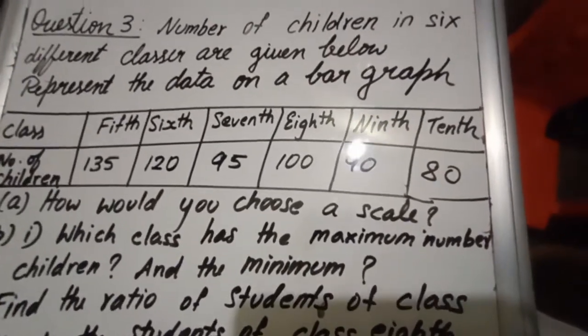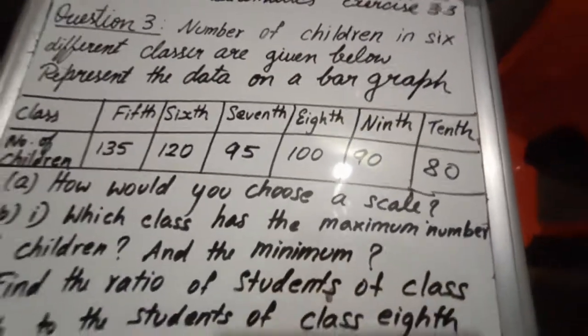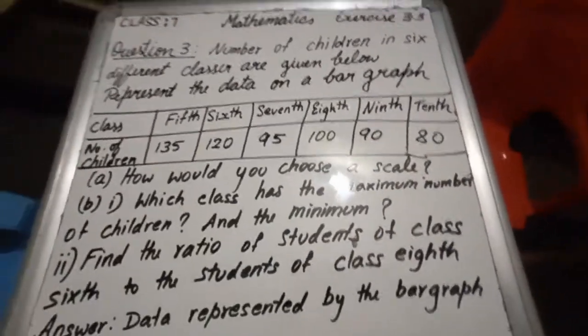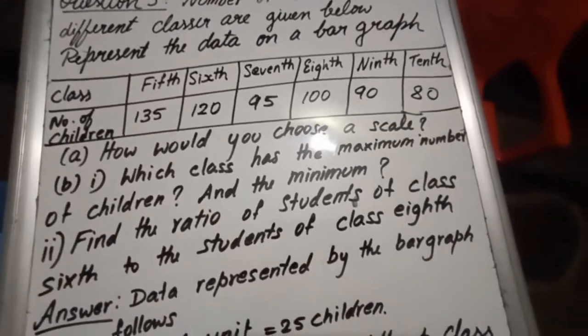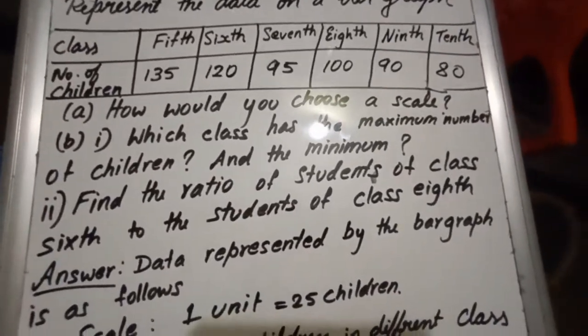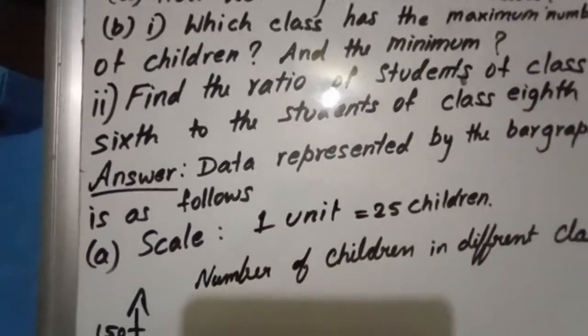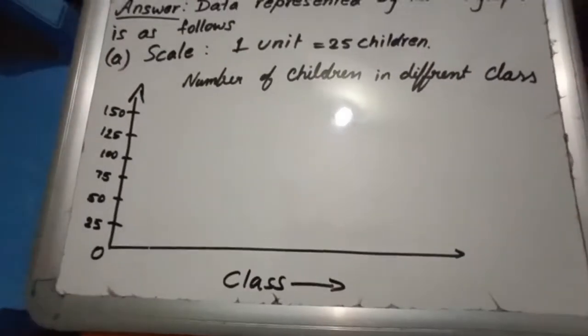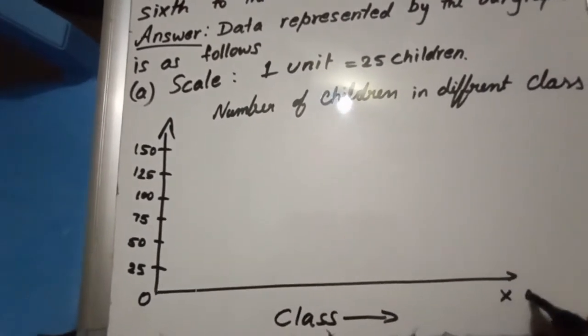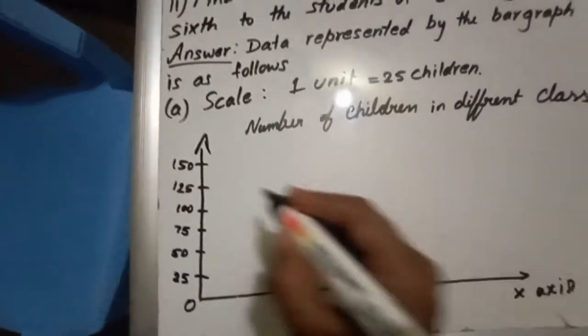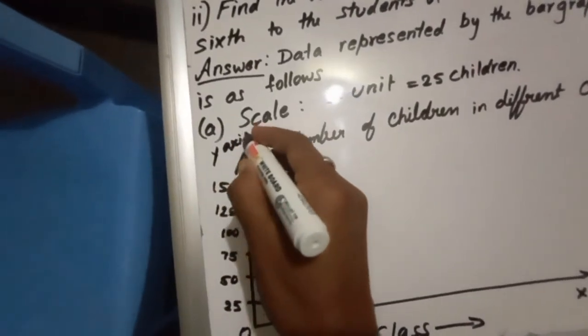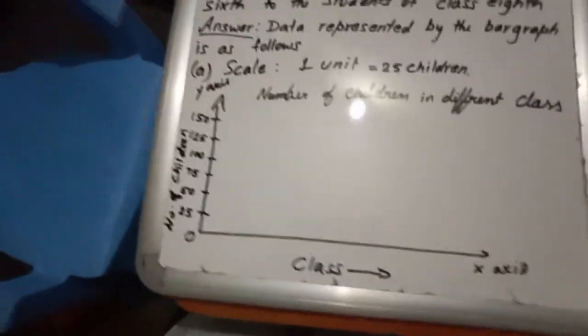But the main thing is that when you have taken the data, you have to be very careful and you have to draw on the measurement graph. My dear students, let us start the bar graph. As I told you, class you have to take on one x-axis. Another one is y-axis. The main thing is here number of children. So we have to write number of children.